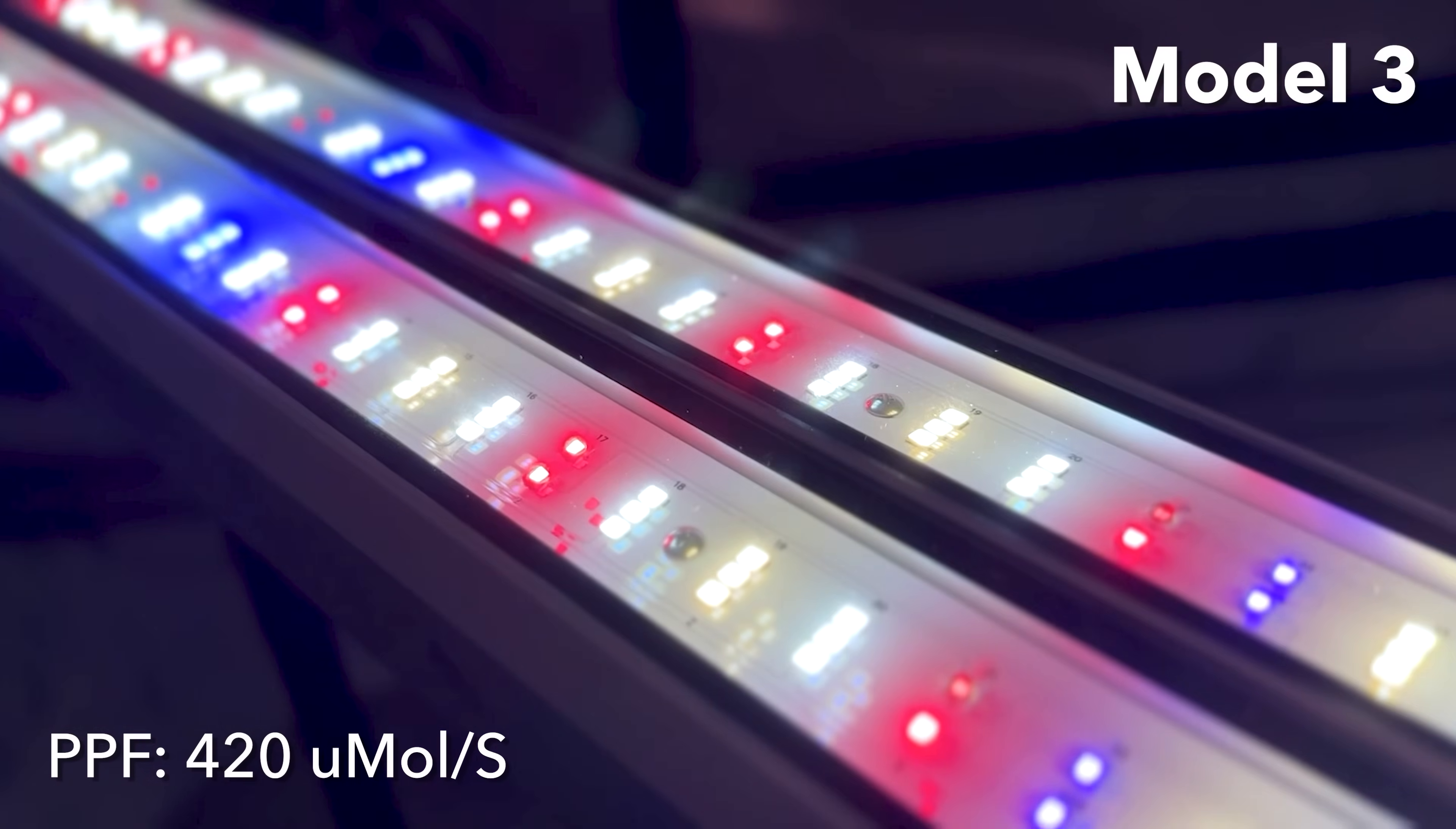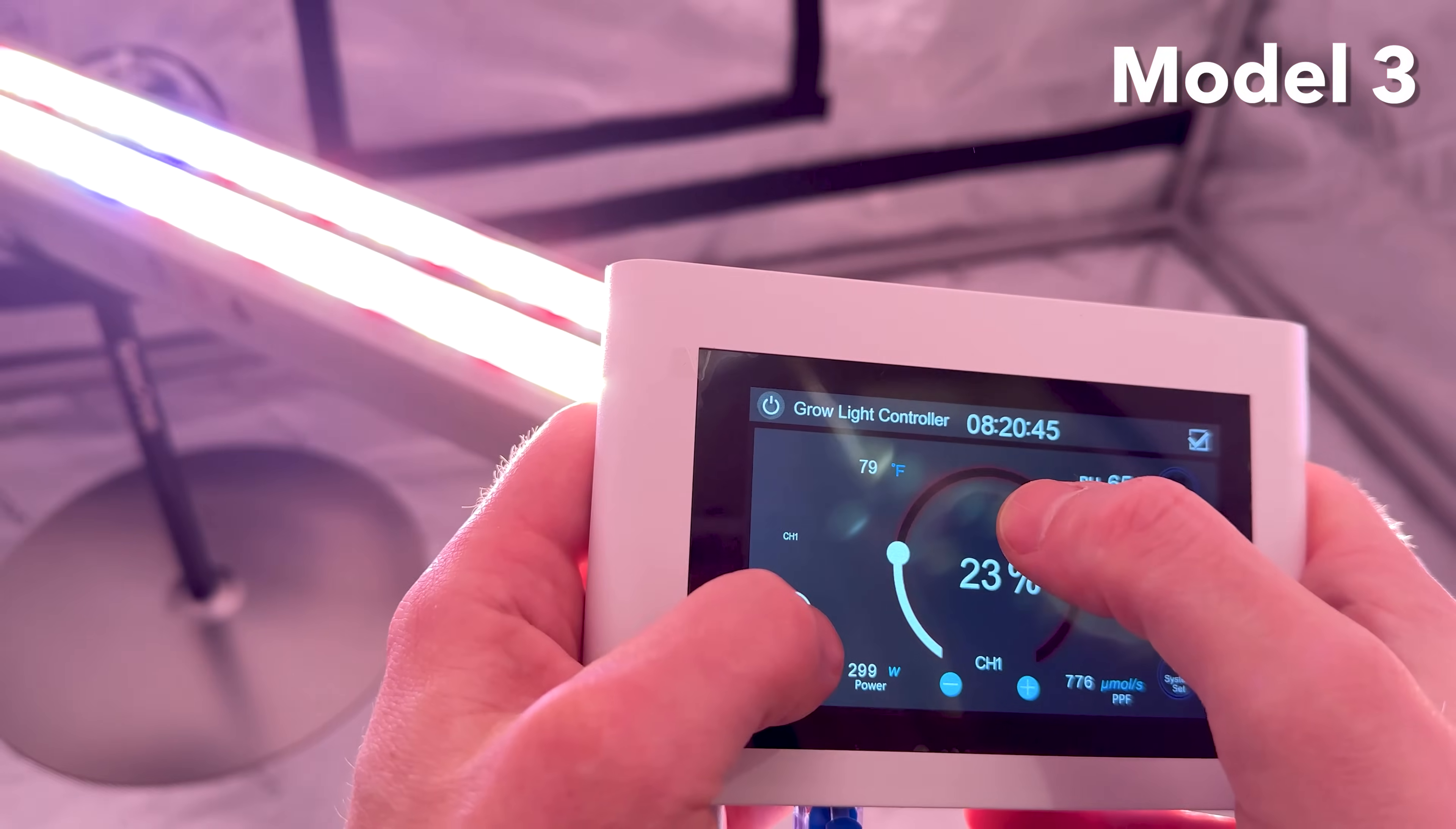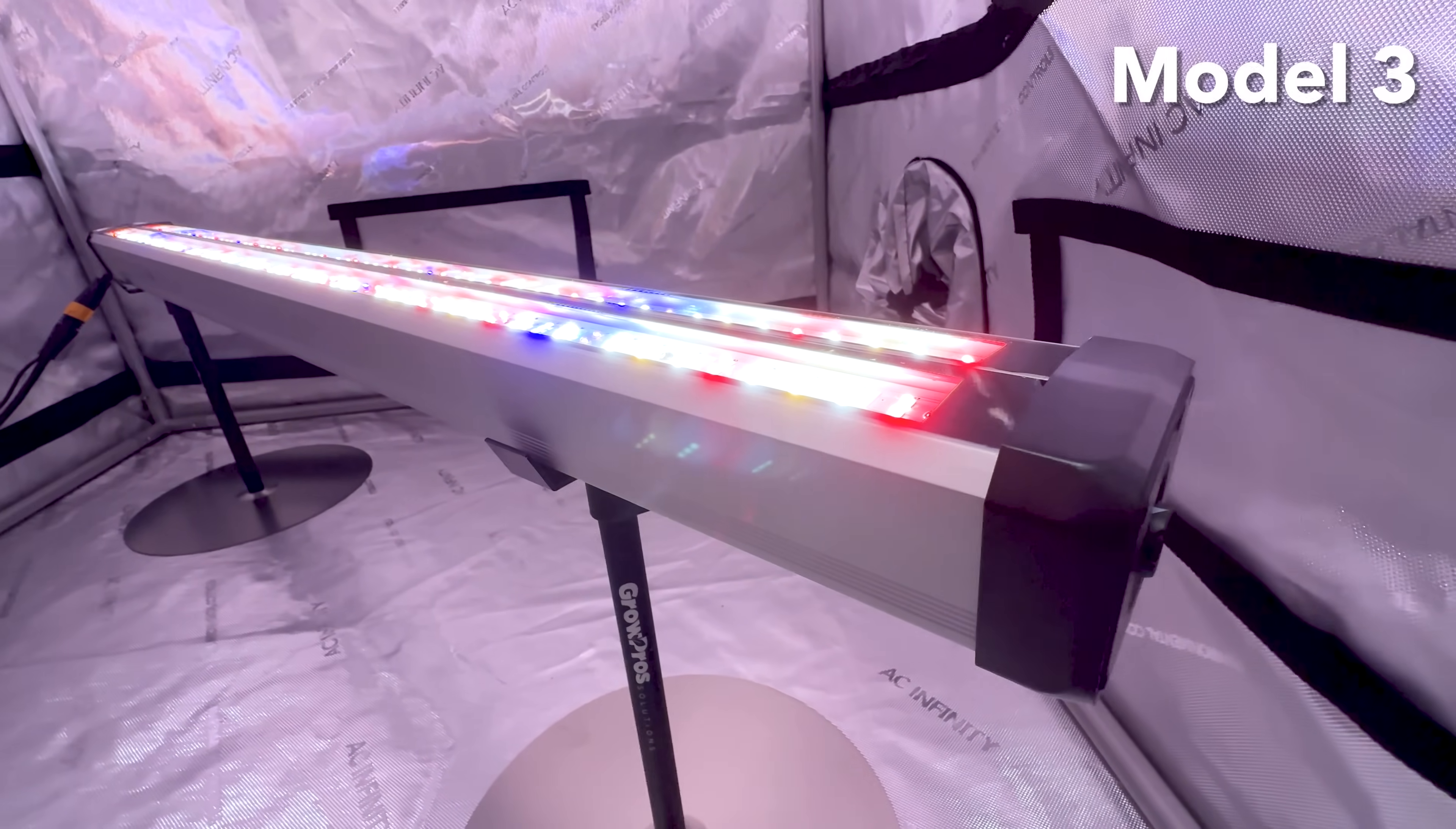With a PPF of 420 micromoles per second and a PPE of 2.8 micromoles per joule, the Model 3 balances energy efficiency and light output effectively. Adjustable intensity for both channels allows growers to fine-tune their lighting throughout their growth cycle. Growers can expect a noticeable improvement in bud density and color as well as overall flower quality. This model's unique spectrum makes it ideal for growers seeking to optimize every stage of plant development.